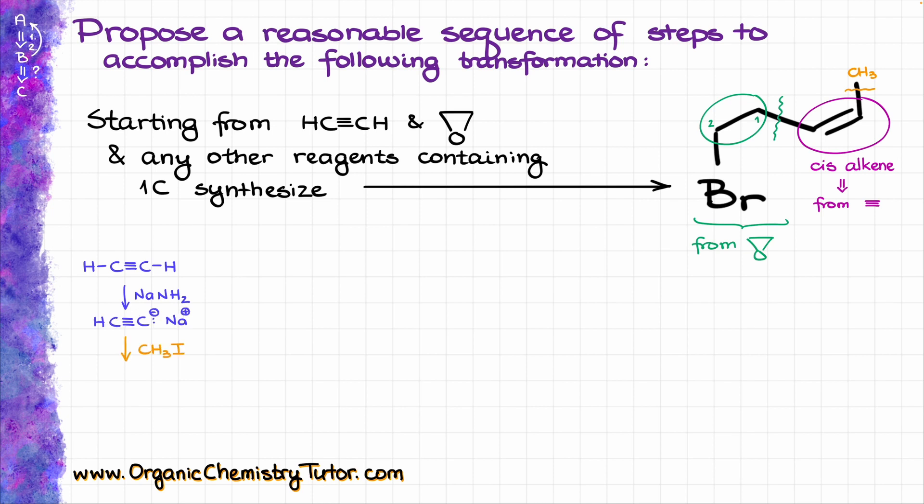Next, we are going to treat it with methyl iodide, which is going to add a methyl group to our terminal alkyne — the methyl group that we need in our final product on the right side of the molecule.